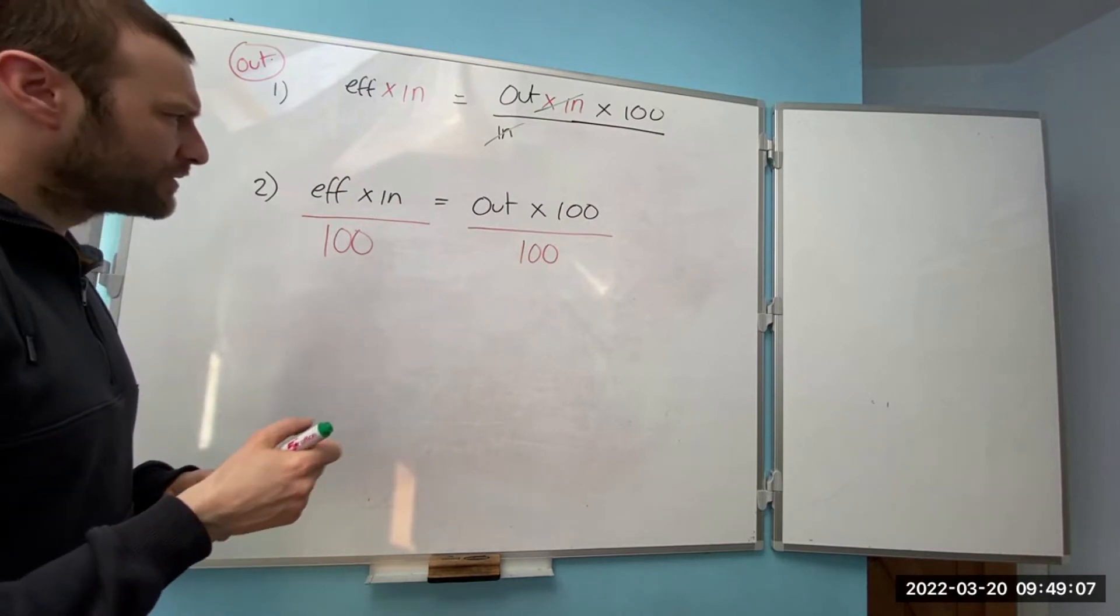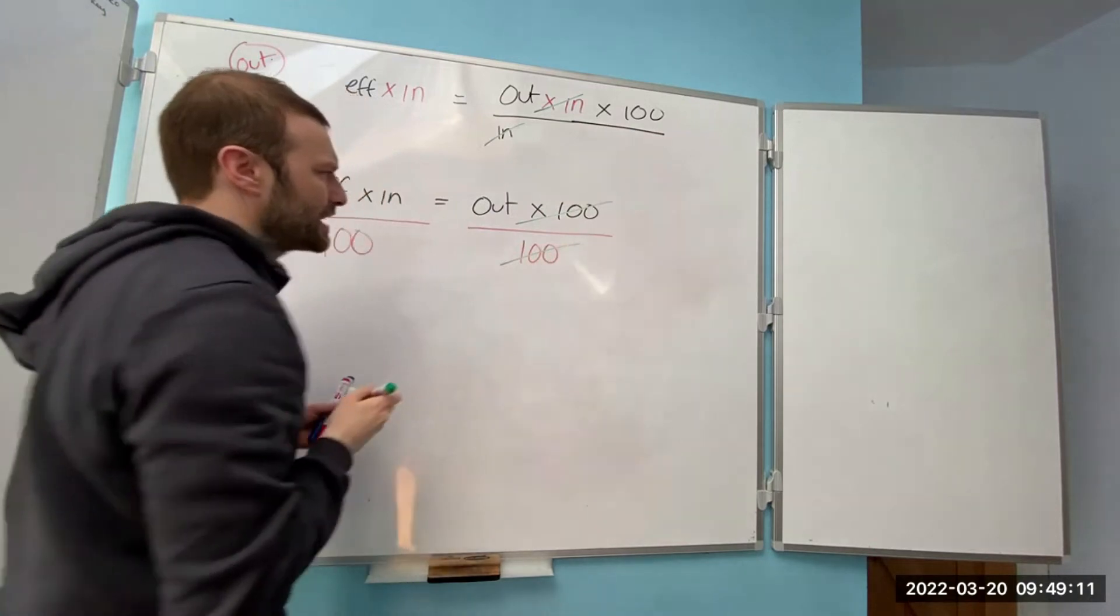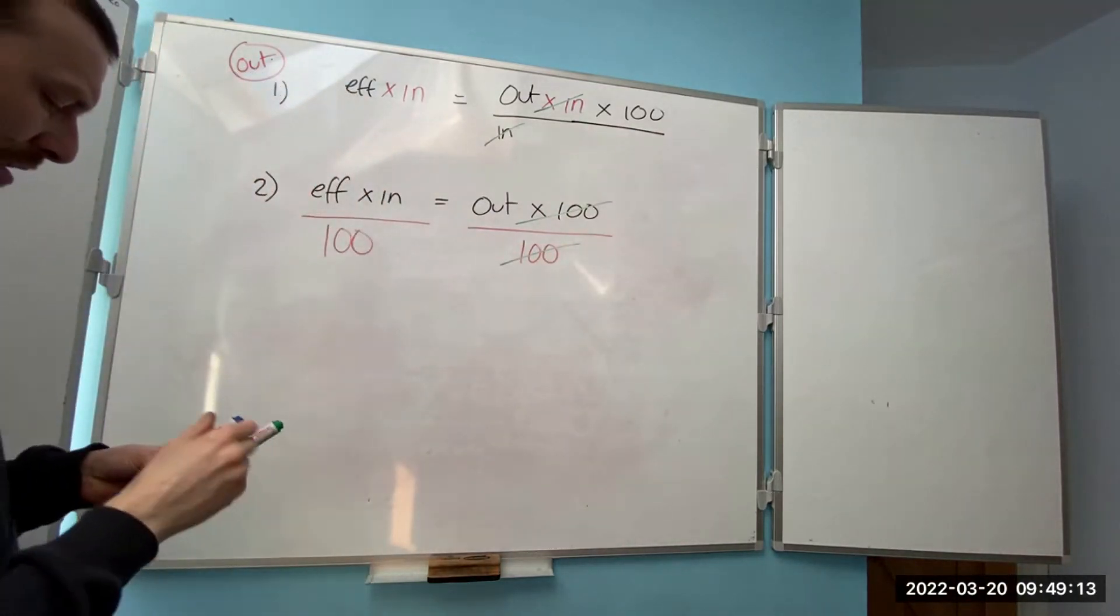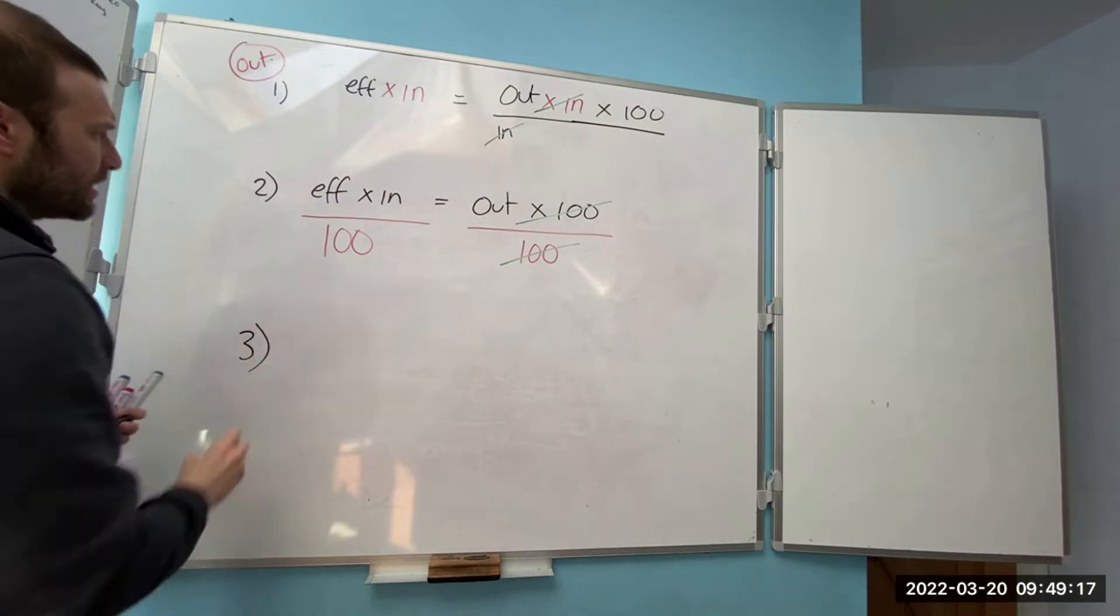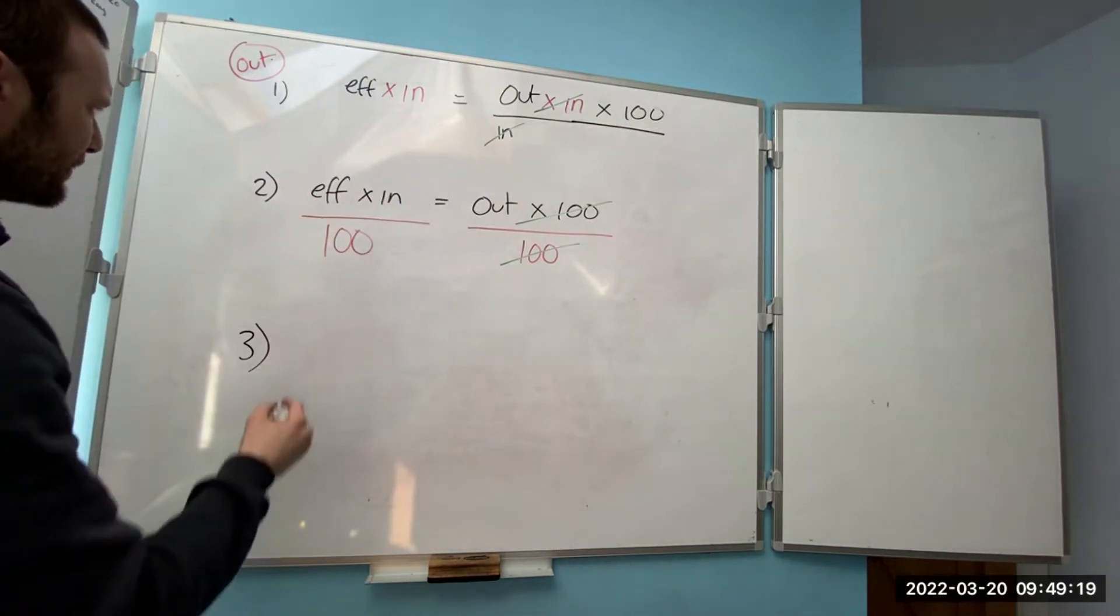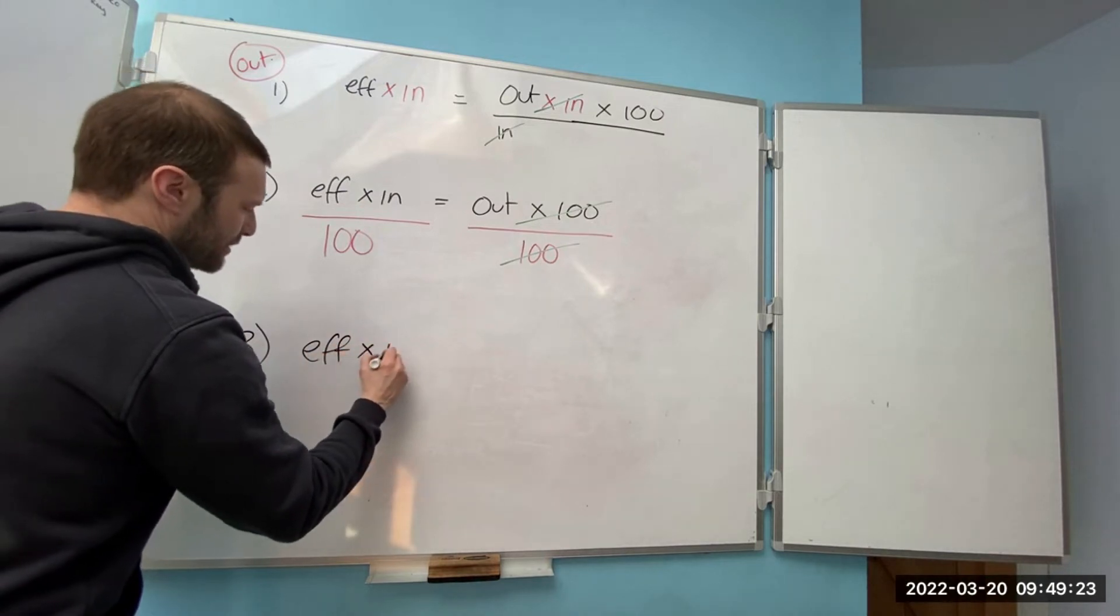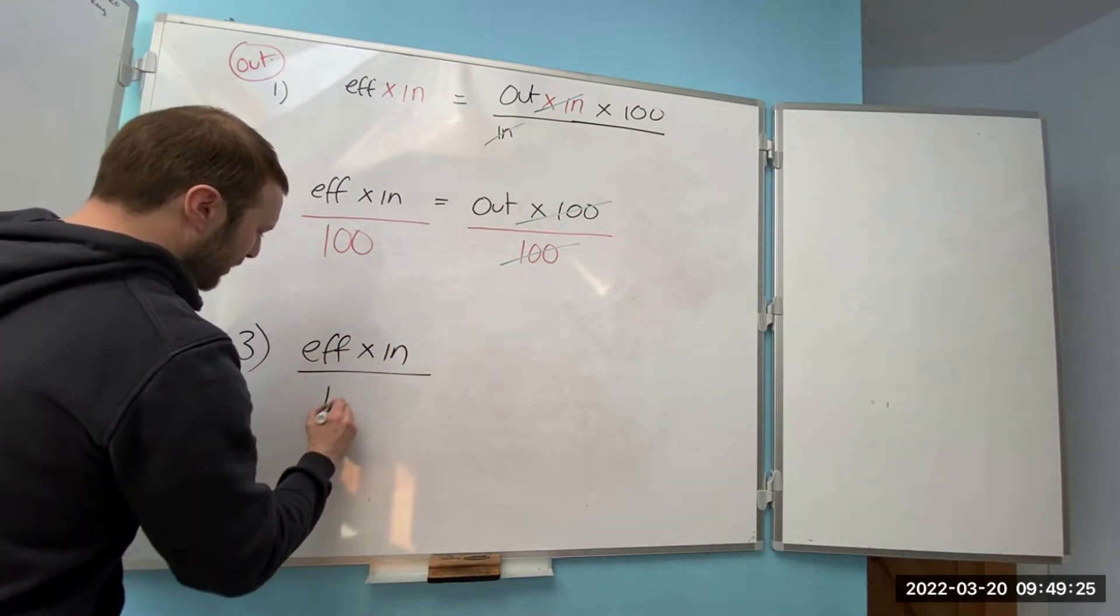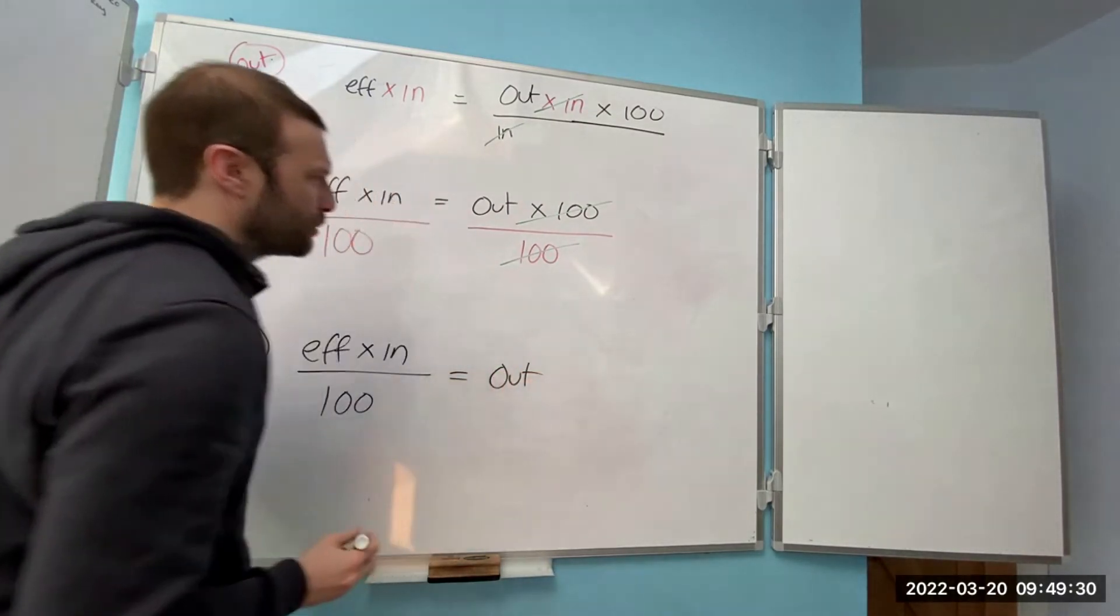However, it looks untidy. So we can clean that up. We can get rid of that and that because they cancel each other out. Then step three, I'll write this out neat. We've got efficiency times input divided by 100 equals your output. Simple, right?